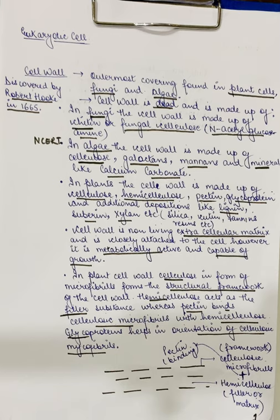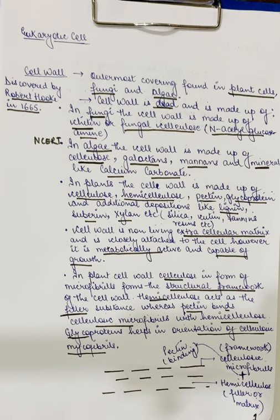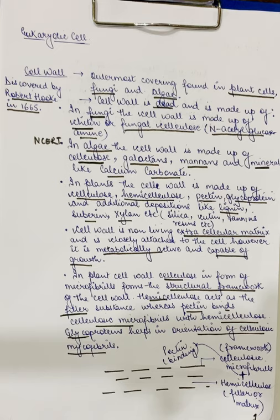To summarize so far: the cell wall was discovered by Robert Hooke. You can find cell wall in plant cells, fungi and alga. In fungi, the cell wall is made up of fungal cellulose which is made up of N-acetyl glucosamine. In alga, the cell wall is made up of cellulose, galactins, mannans, and minerals like calcium carbonate. In plants, the cell wall is made up of cellulose, hemicellulose, pectin, glycoproteins and additional depositions like lignin, suberine, xylans, silica, cutene, tannins, resins, etc.